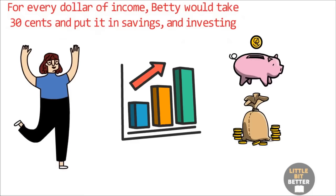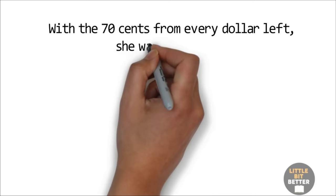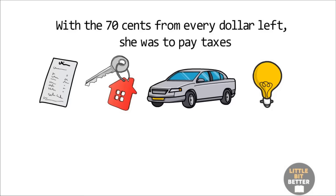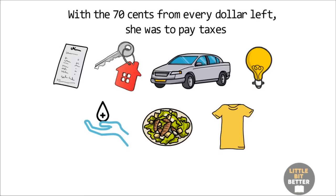With the 70 cents from every dollar left, she was to pay taxes, liabilities such as our mortgage and car payments, and then our bills such as electricity, water, food, clothing, etc. Needless to say, for a long time we came up short every month. Although we had paid ourselves first, we did not have enough money to pay others.